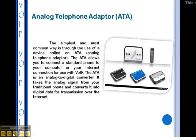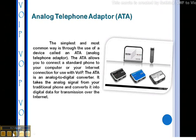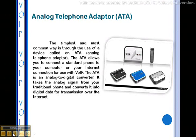Analog Telephone Adapter: The simplest and most common way is through the use of a device called an ATA. The ATA allows you to connect a standard phone to your computer or your Internet connection for use with VoIP. The ATA is an analog-to-digital converter — it takes the analog signal from your traditional phone and converts it into digital data for transmission over the Internet.